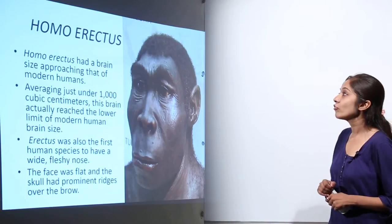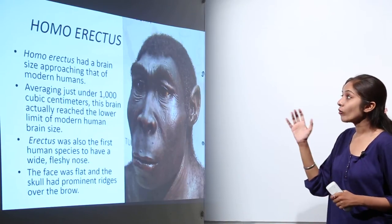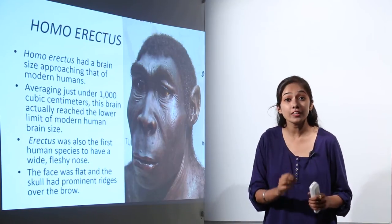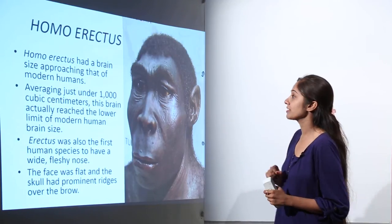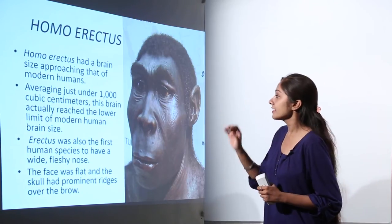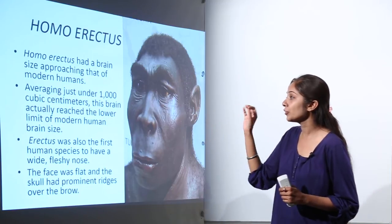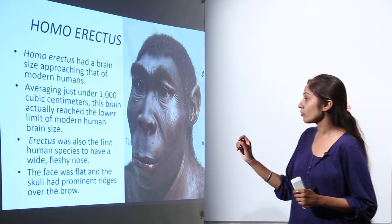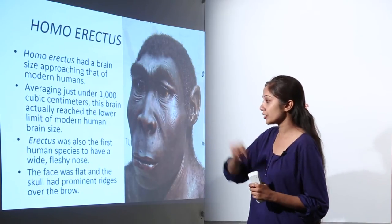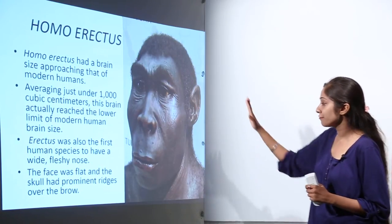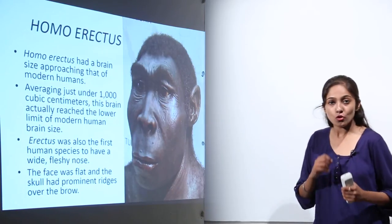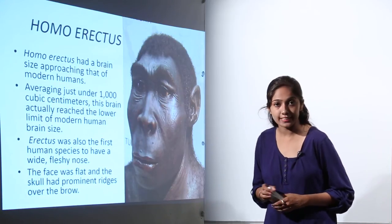Moving on, we have Homo erectus. Homo erectus had a brain size approaching that of modern humans, averaging just under 1000 cubic centimeters — reaching the lower limit of modern human brain size. Erectus was also the first human species to have a wide, fleshy nose. The face was flat and the skull had prominent ridges over the brow.